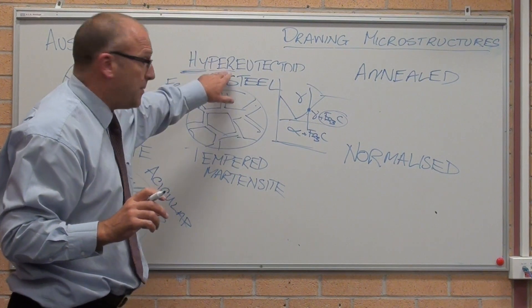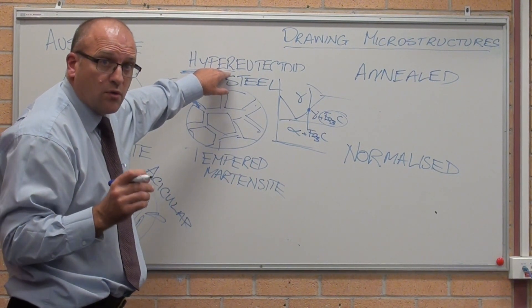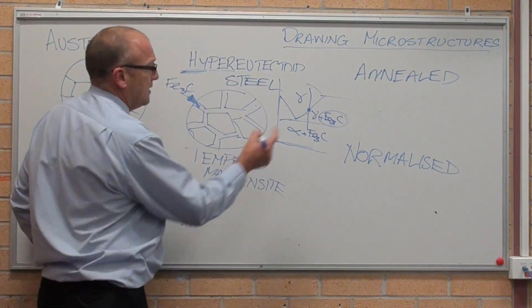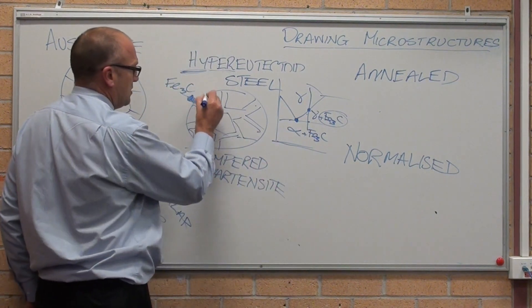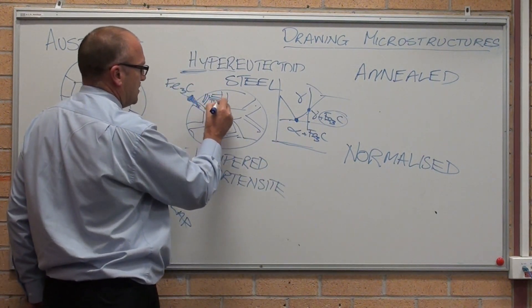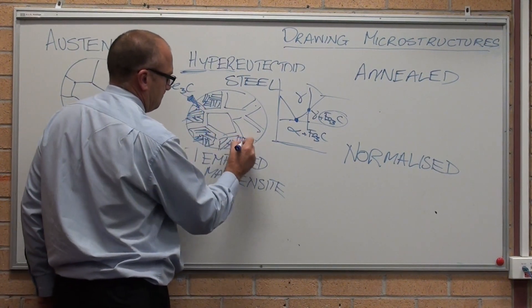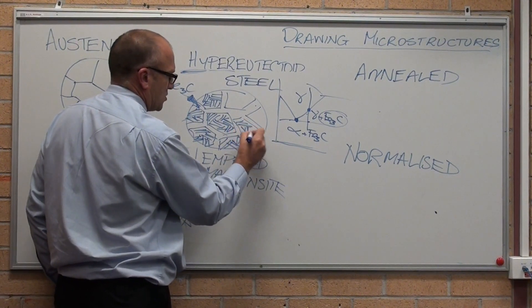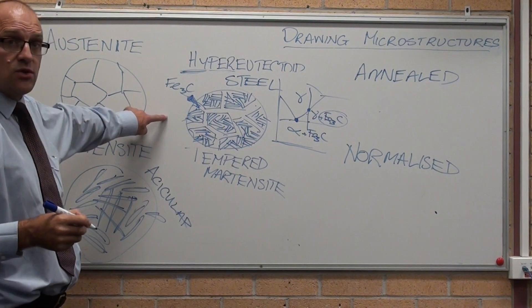Hypereutectoid steels, if they're not cooled in the correct manner, look like this, and they are brittle and hard. Inside, when it gets to 723 degrees, every one of those grains is perlite. Well, that's what a hypereutectoid steel looks like.